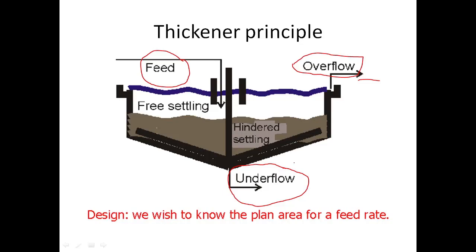There is a rake at the bottom of the thickener that revolves very, very slowly. It's not designed to mix the solids; it's just designed to pull the solids down into the underflow to stop any accumulation on the bottom surface. Although there is a conical section at the base, we tend to ignore it. When it comes to modelling the process, we regard the vessel as a cylinder.